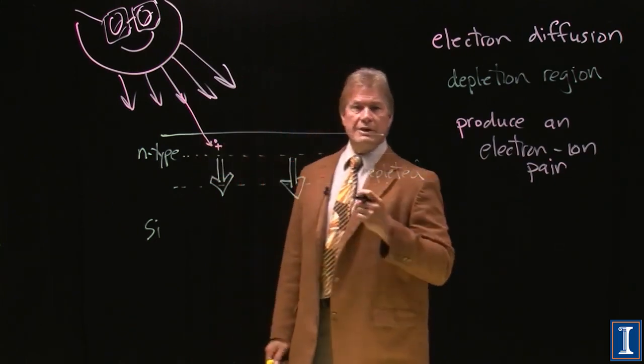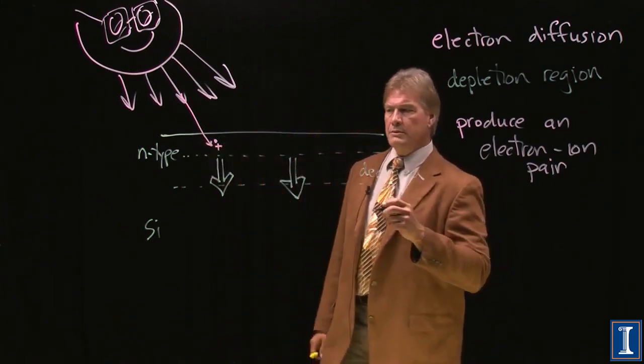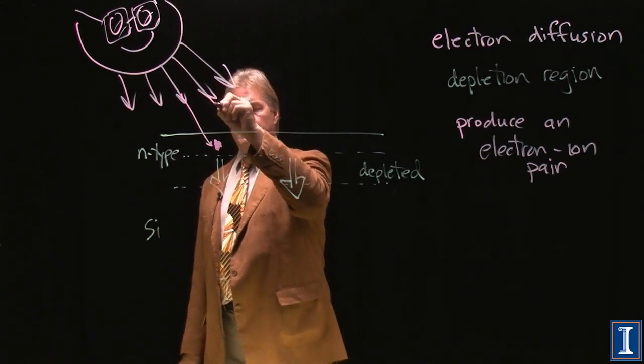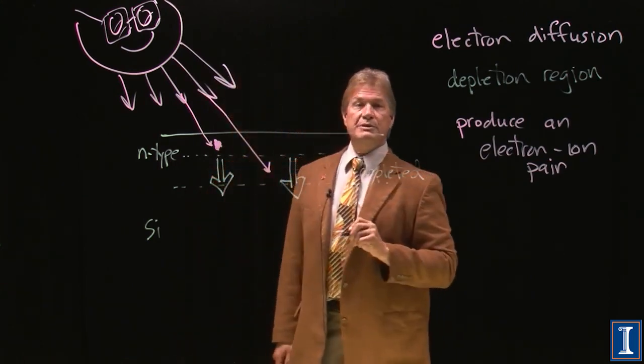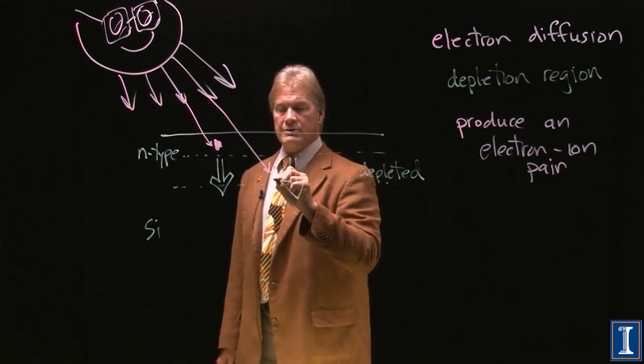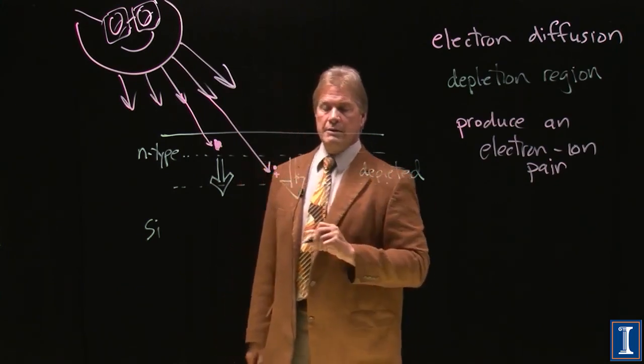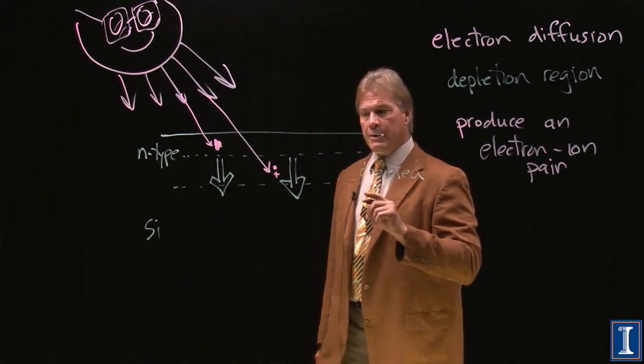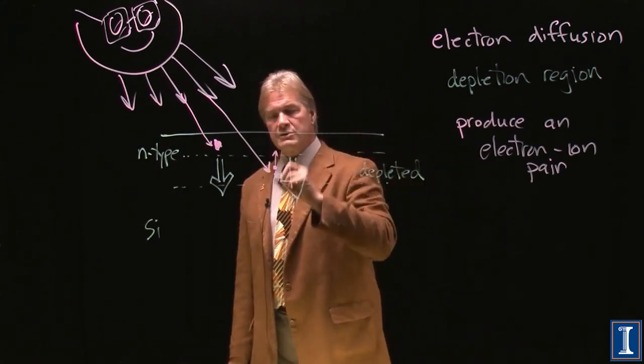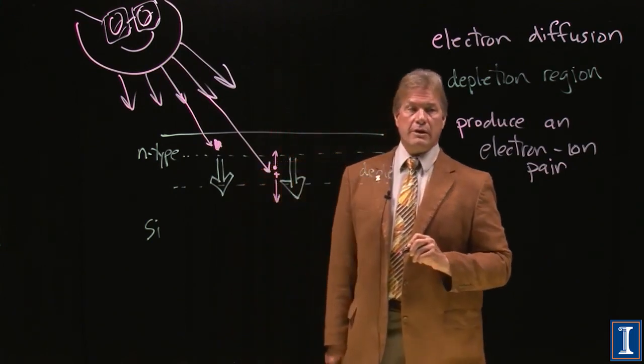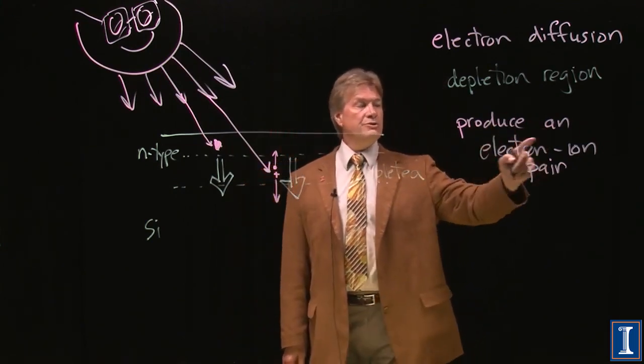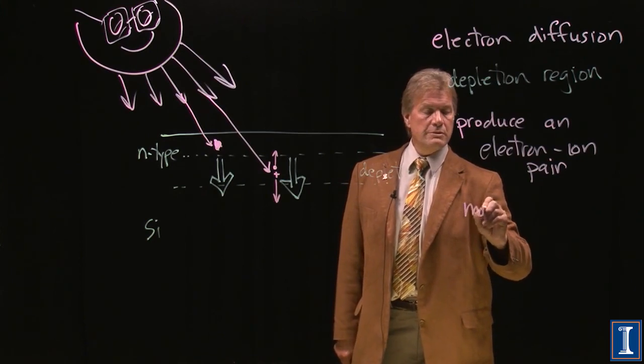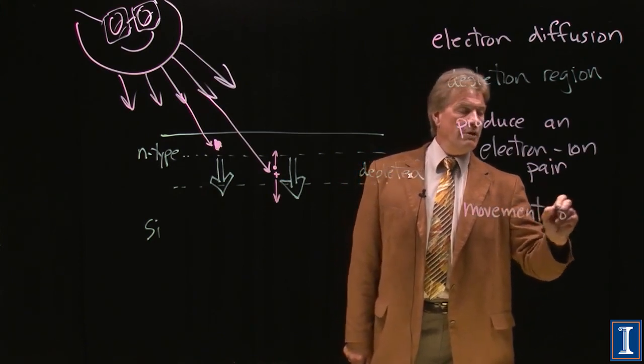It will now make an electron-ion bond. But in this region, back here in the N-type region, there's no electric field. These things just combine back together. Well, let's say we had a photon that gets absorbed in the depletion region. Now, I have an electron and I have an ion, but they are in an electric field. So what will happen is the electron will feel a force this direction and the ion will feel a force this way. So if I produce an electron-ion pair in the depletion region, I will get movement of charge.